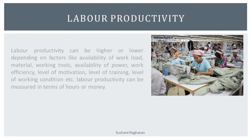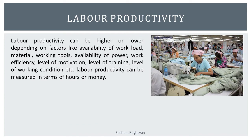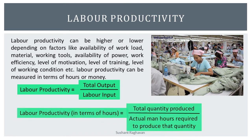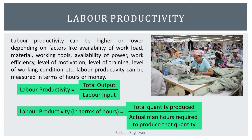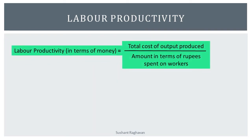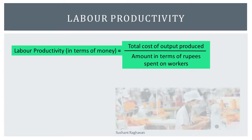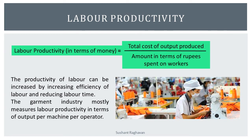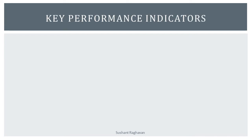Labor productivity can be higher or lower depending on factors like availability of workload, material, working tools, availability of power, work efficiency, level of motivation, level of training, level of working conditions, etc. Labor productivity can be measured in terms of hours or money. Labor productivity = total output ÷ labor input. In terms of hours: total quantity produced ÷ actual man-hours required to produce that quantity. In terms of money: total cost of output produced ÷ amount in rupees spent on workers. The productivity of labor can be increased by increasing efficiency of labor and reducing labor time. The garment industry mostly measures labor productivity in terms of output per machine per operator.